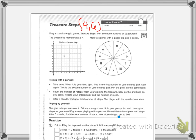I'm going to leave up at the top where it's at. It tells you to, the goal is to get as close to 30 steps as you can. Spin and plot your point and count your steps as you would if you were playing with a partner. Record the ordered pairs and steps. After 5 rounds, find the total number of steps. How close did you get to 30? So let's say I had 9 and 1, over 9, up 1.